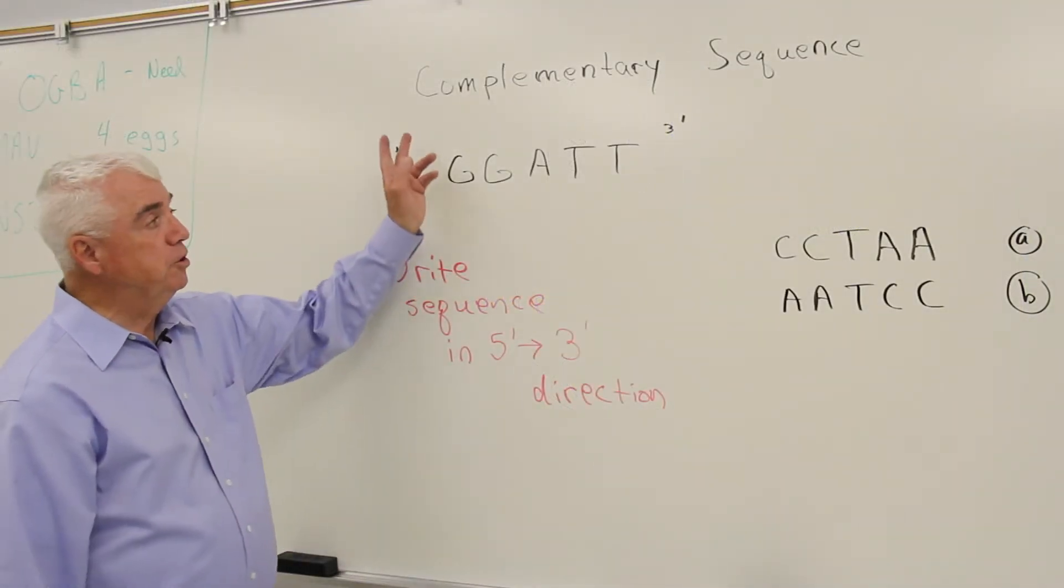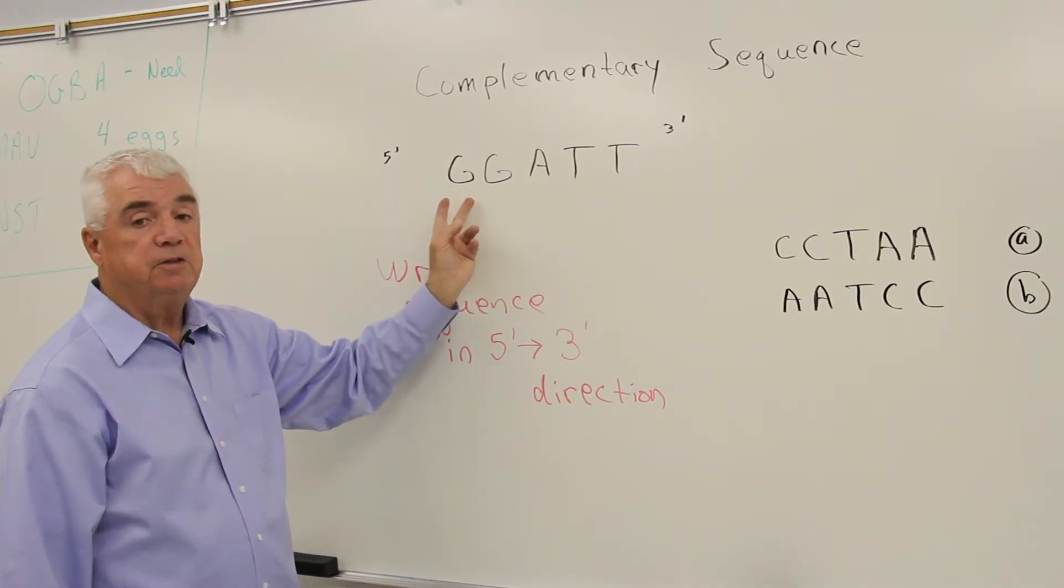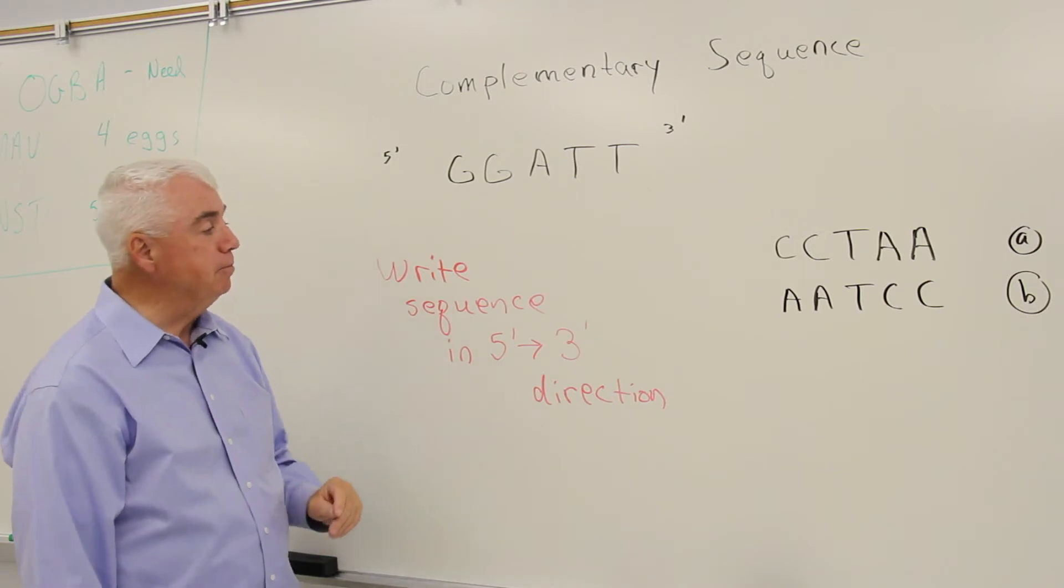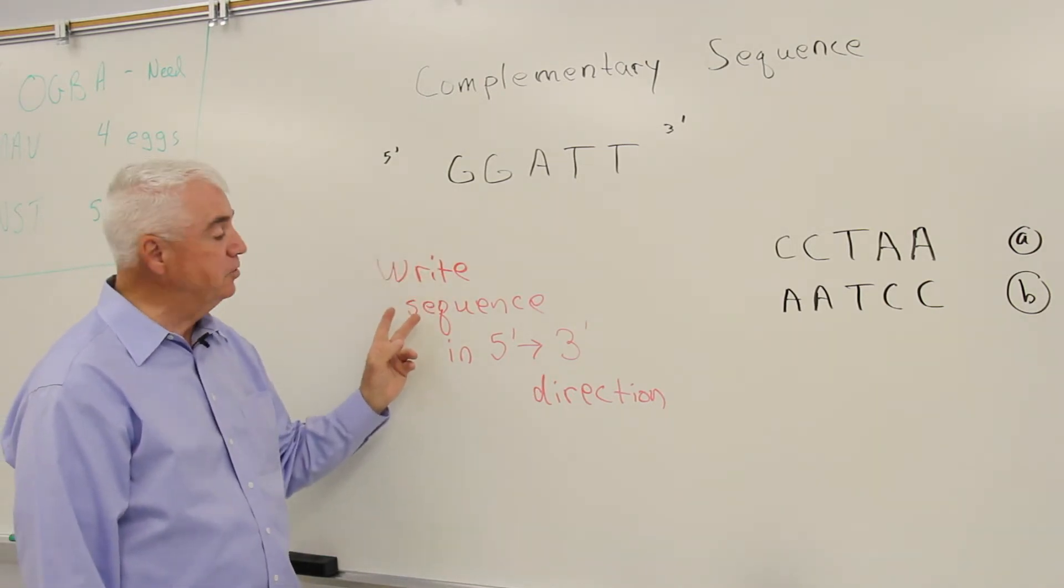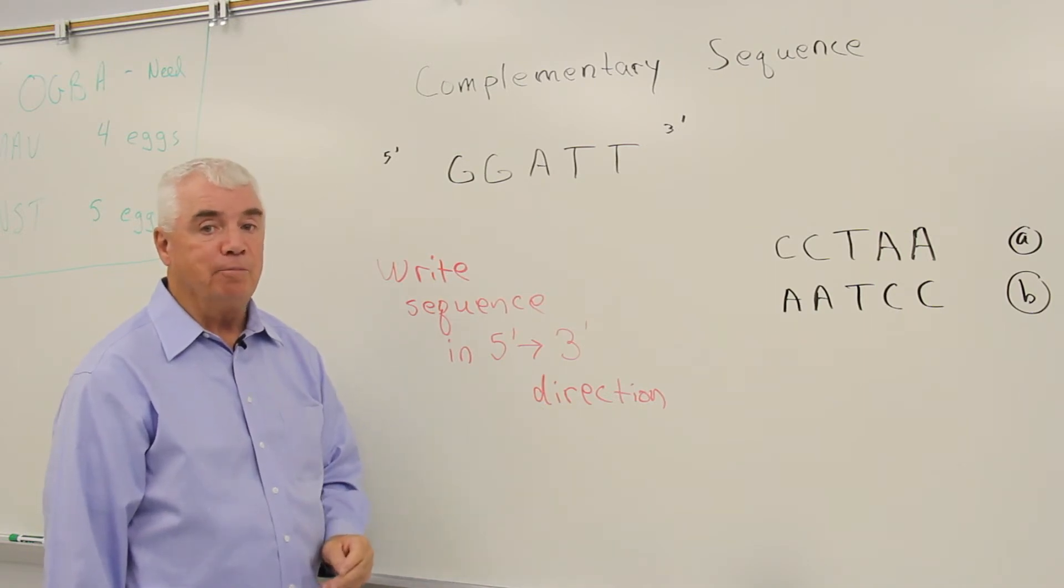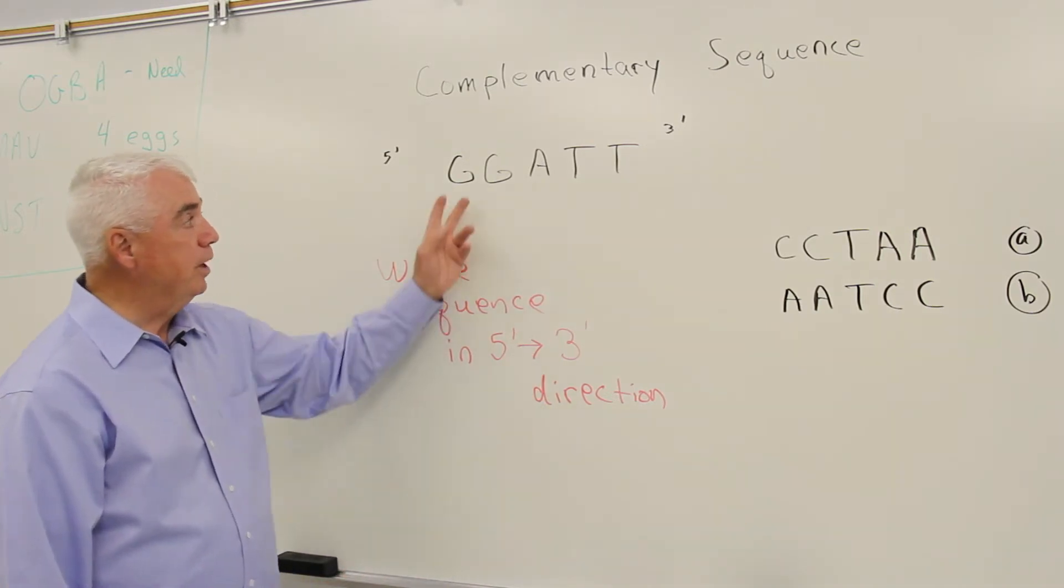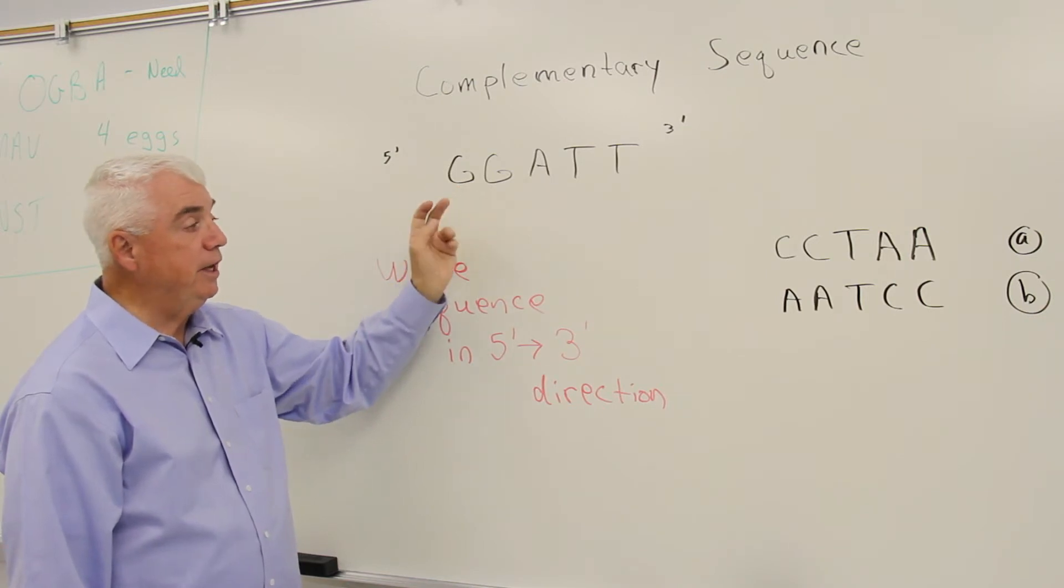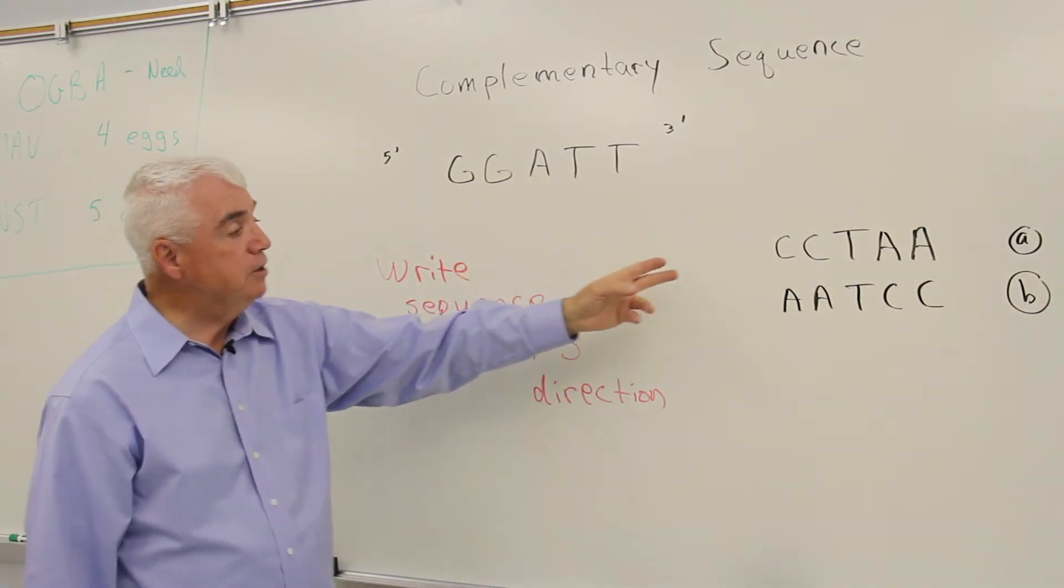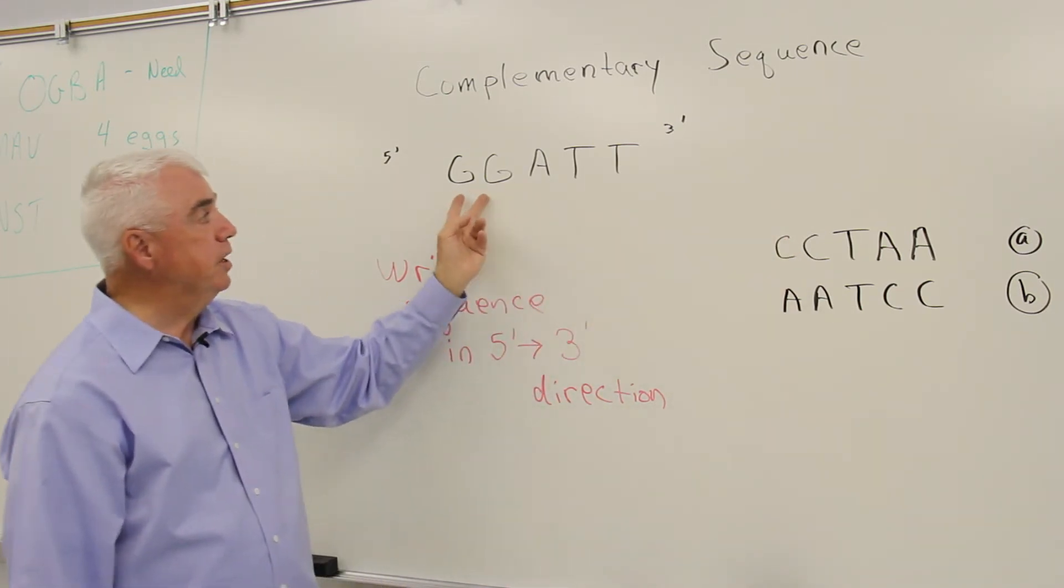If you were asked to write the complementary sequence to a DNA segment, it's a little bit tricky. You have to keep in mind that perhaps you'll be asked to write the sequence in the five prime to three prime direction. We know that opposite every G is a C. And so this top one over here, it's the complementary sequence, isn't it, to this?